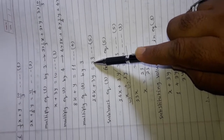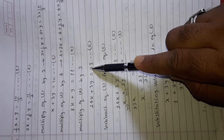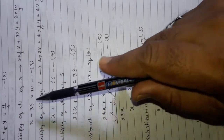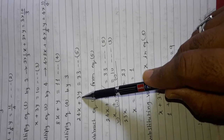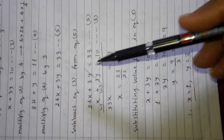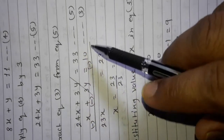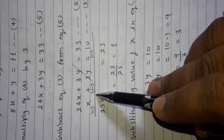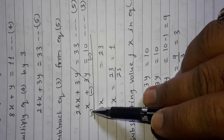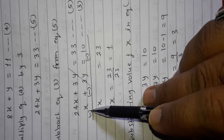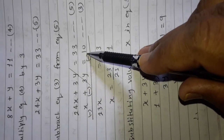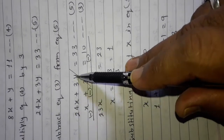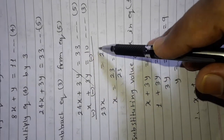Now look carefully at equations 3 and 5 — y is equal in both, and both signs are the same (plus 3y). So we subtract equation 3 from equation 5. The signs of equation 3 change: plus becomes minus. 24x minus x gives 23x; plus 3y minus 3y cancels; 33 minus 10 gives 23.